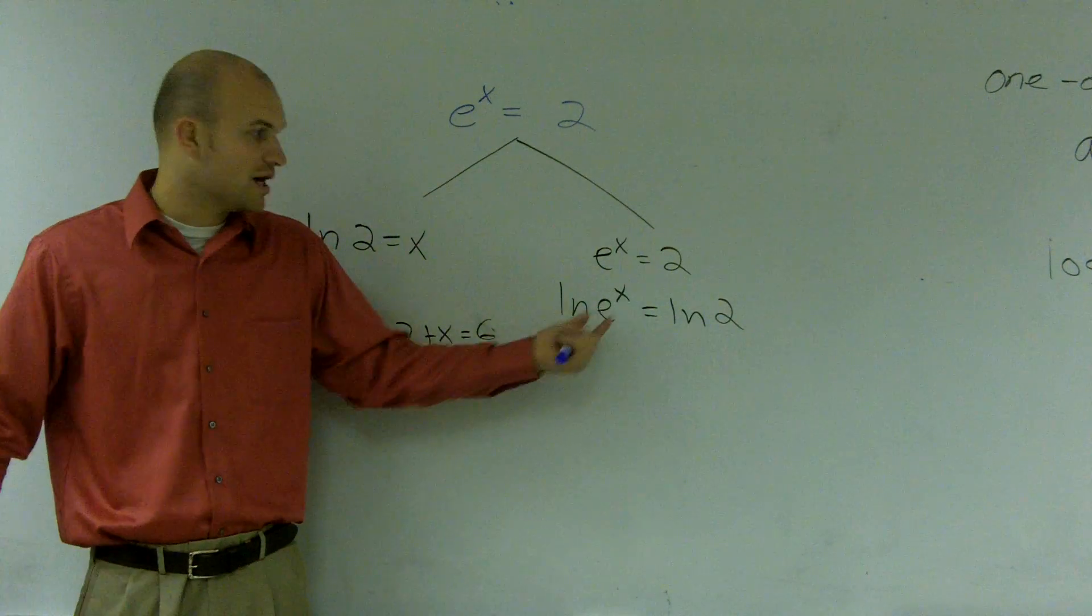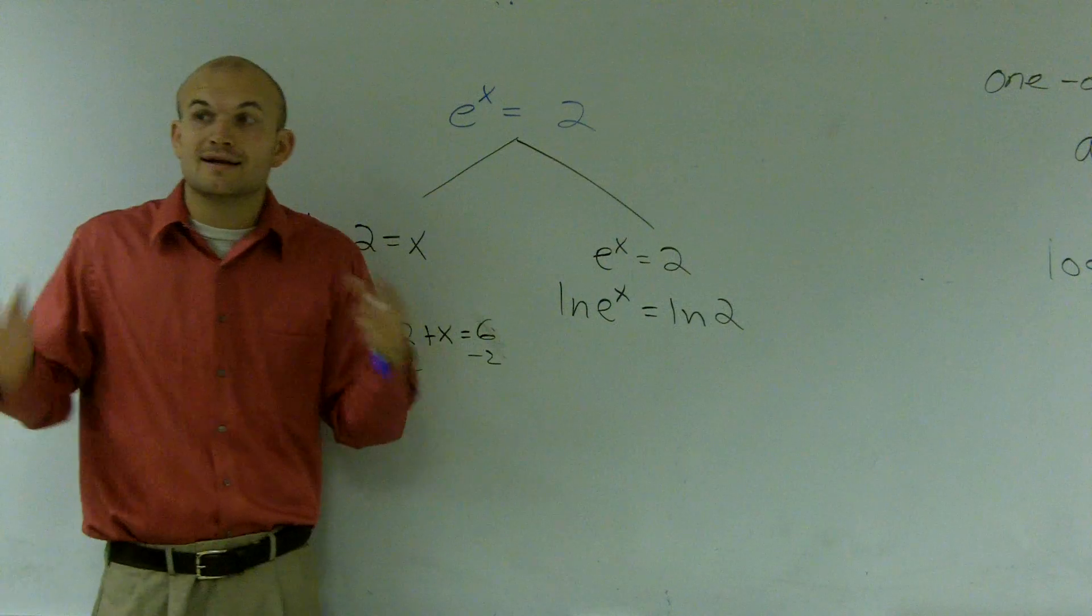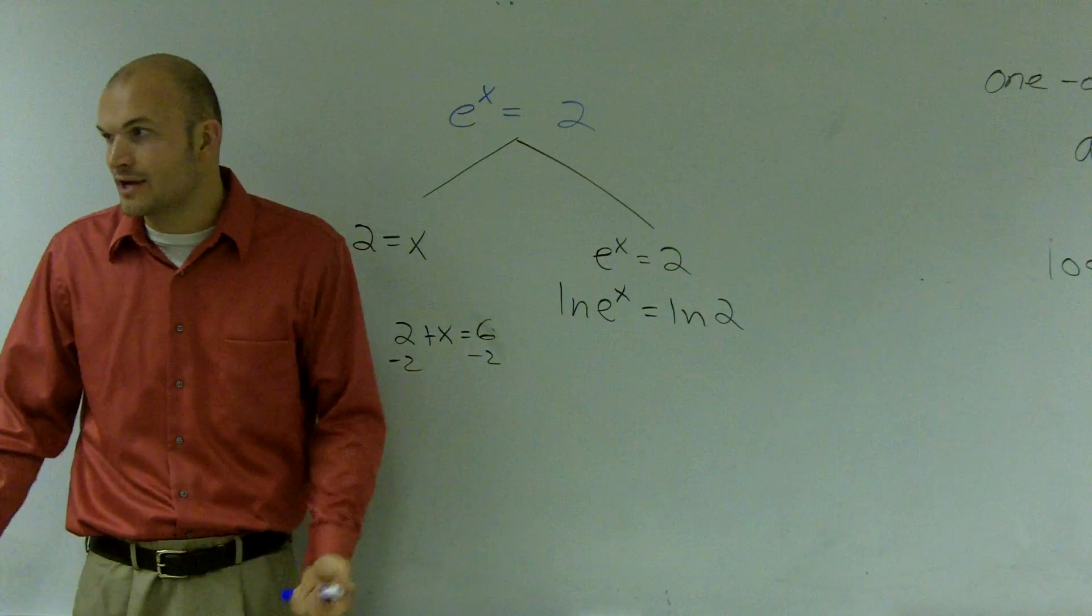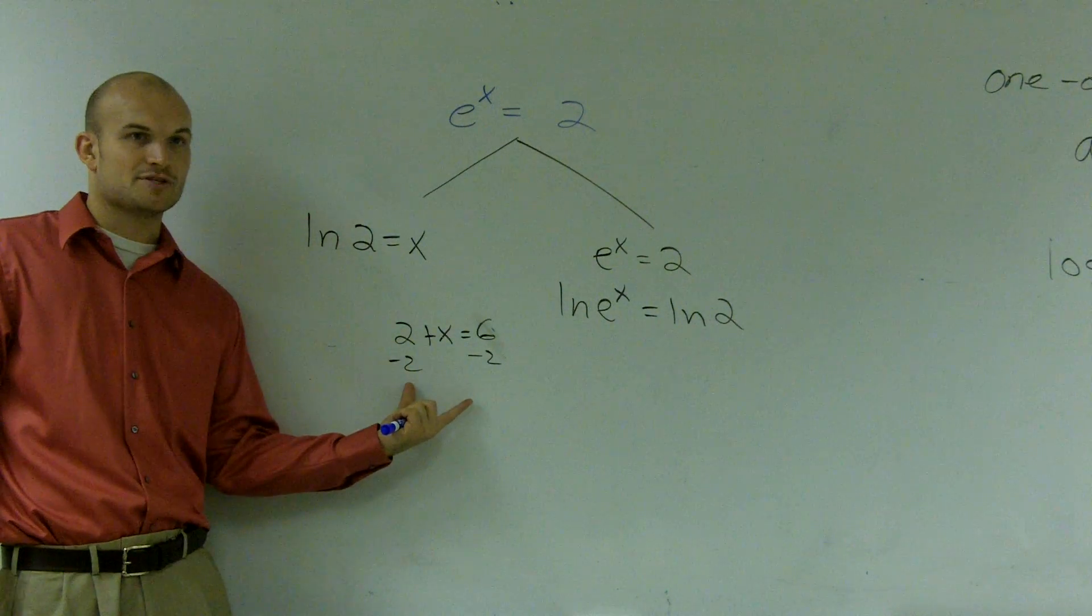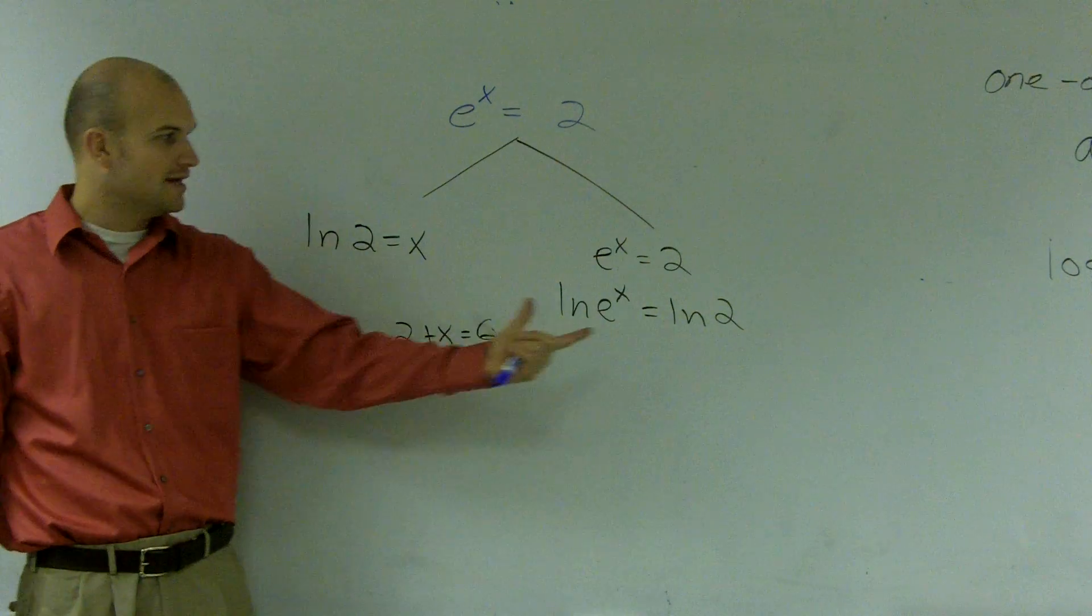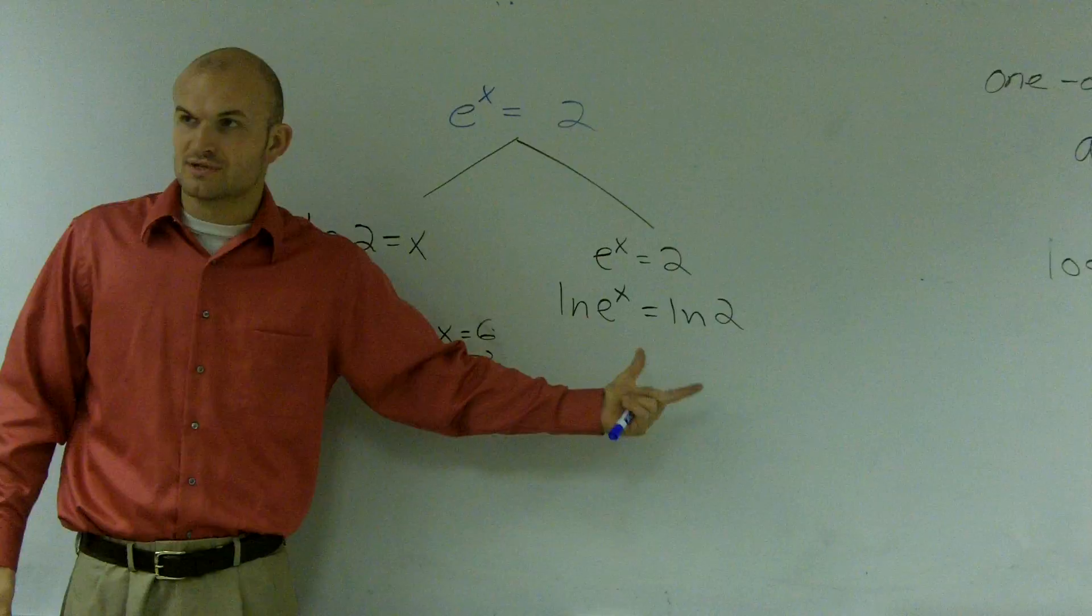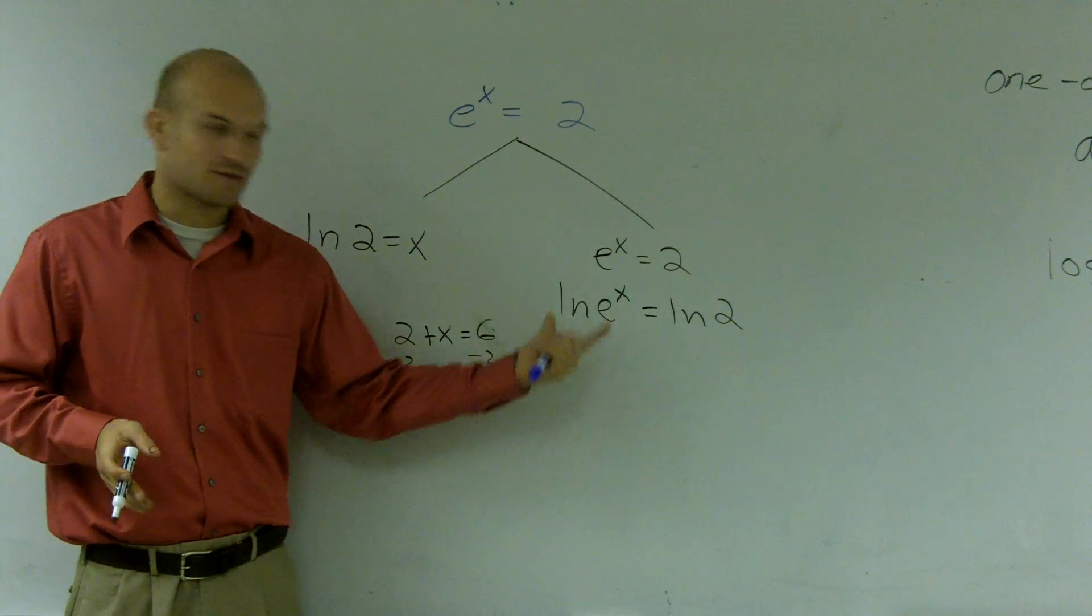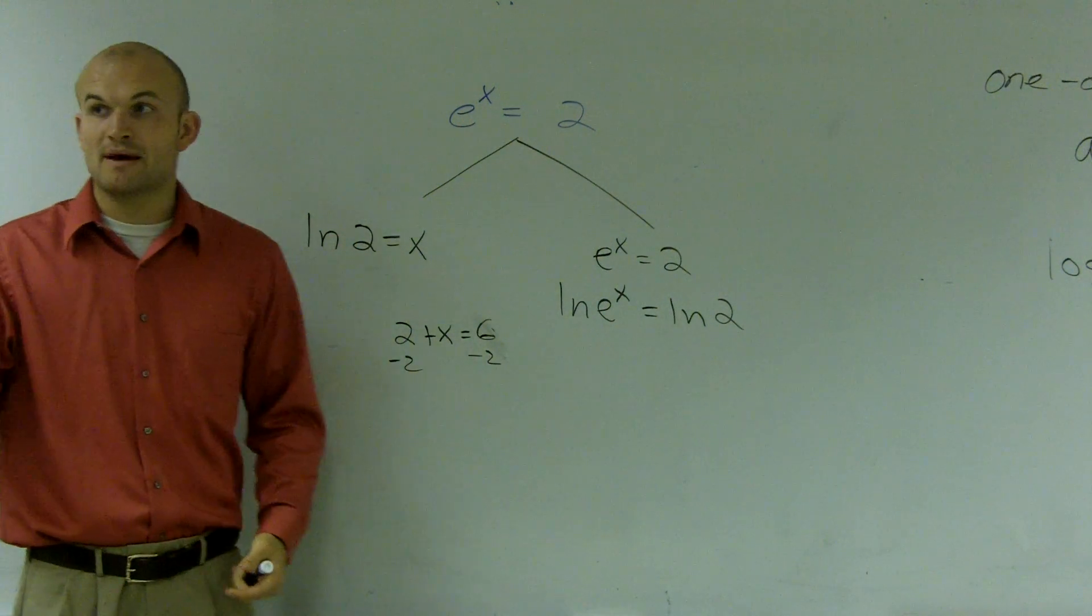So you can take the log of both sides, right? Now you'd say, why the heck would you ever want to do that, right? Yeah, I understand why you're taking the negative 2. That's easy. You need to solve for x. Here, why would I take the logarithm of both sides? Well, the reason why I took the natural logarithm of both sides is because, remember, my inverse properties.